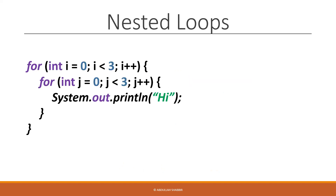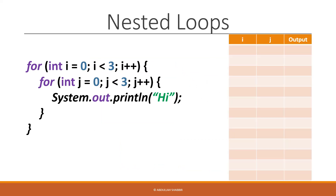Let's trace this program step by step and watch variables i and j as we go. Starting with the outer loop, i is initialized to zero, and we check if i is less than three. In this case it is, so we step inside and enter the inner loop.